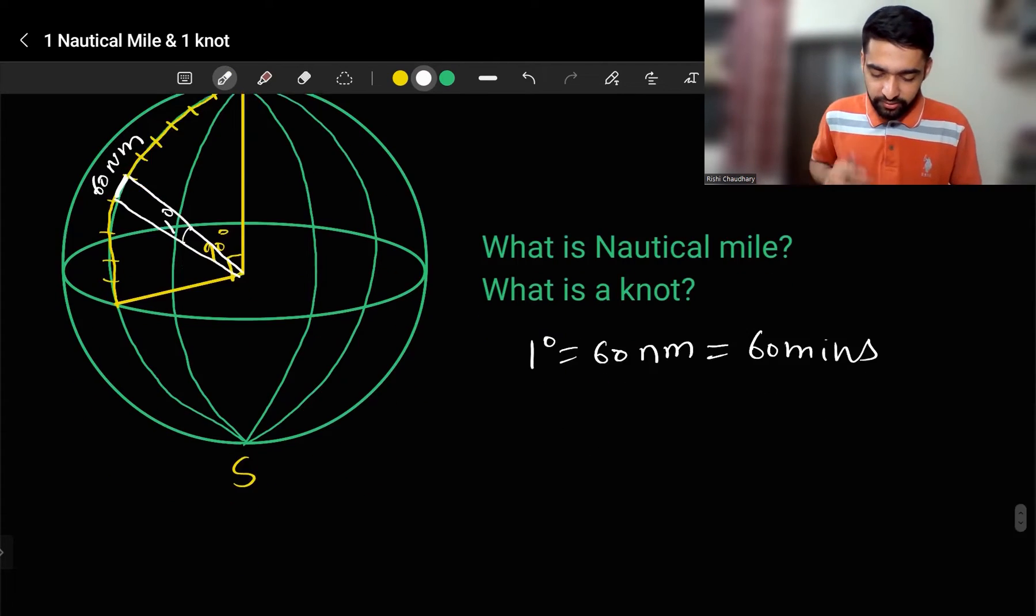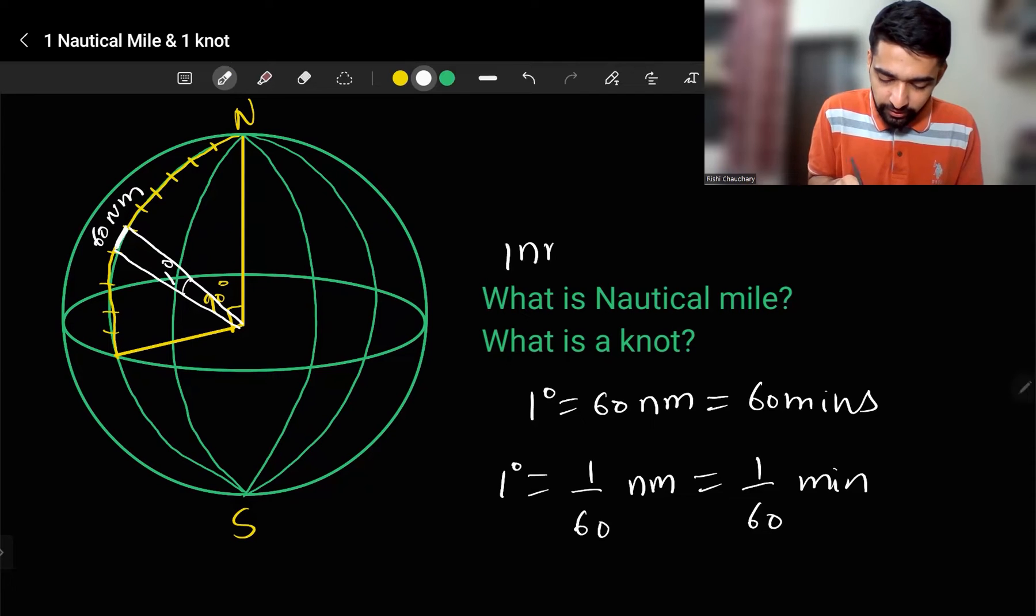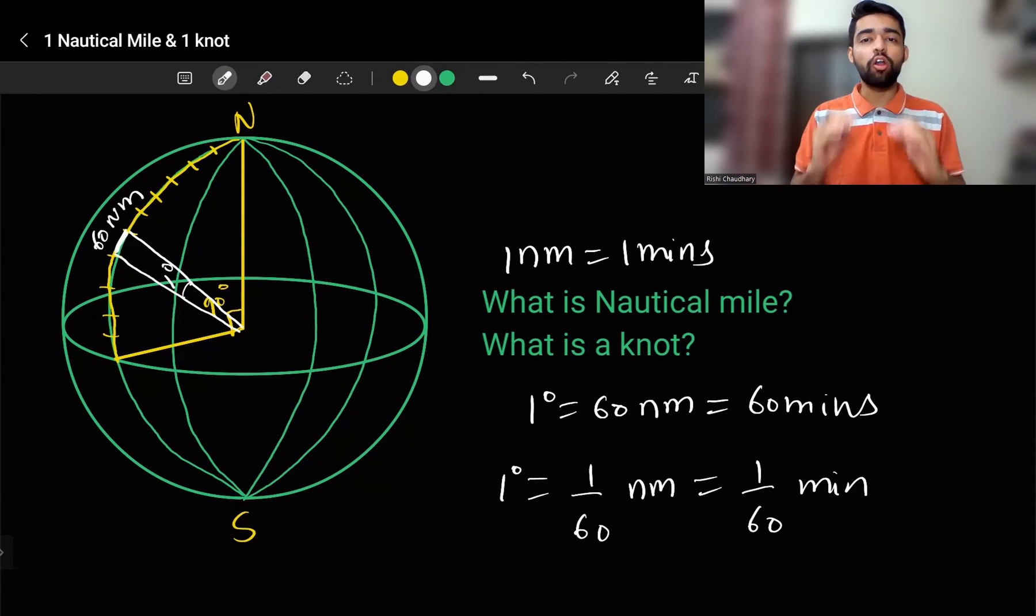So what I can get from here is one nautical mile equals one minute. We always use nautical miles to measure Earth distance instead of the metric system or statute miles. It is because nautical mile is a very standard unit for our Earth's curvature.